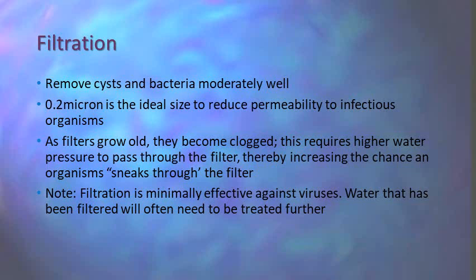Filtration is a really good way to remove cysts and bacteria. 0.2 micron size is the ideal size that you want for your filter — that increases the chance of it preventing infectious organisms from passing through. As filters grow older they often become clogged, meaning you're going to have to use higher water pressure to pass your water through the filter, which unfortunately increases the chance of your filter not providing the permeability that you need. Filtration really does not work well against viruses. They're far smaller than 0.2 microns and you're going to have viral burden in the water you get via filtration. Water that you've filtered you'll often need to treat further in order to prevent any sort of viral infection.